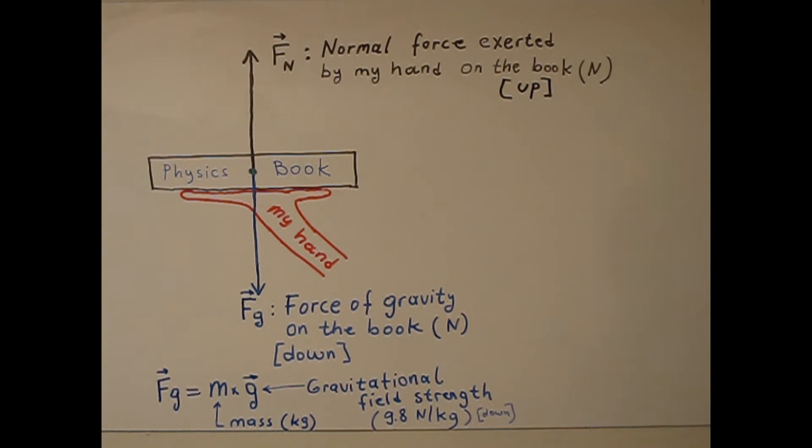In this case, force of gravity on the book, in other words weight of the book, equals Fg equals mass times gravity. The mass is in kilogram. G is gravitational field strength, 9.8 N per kilogram down.